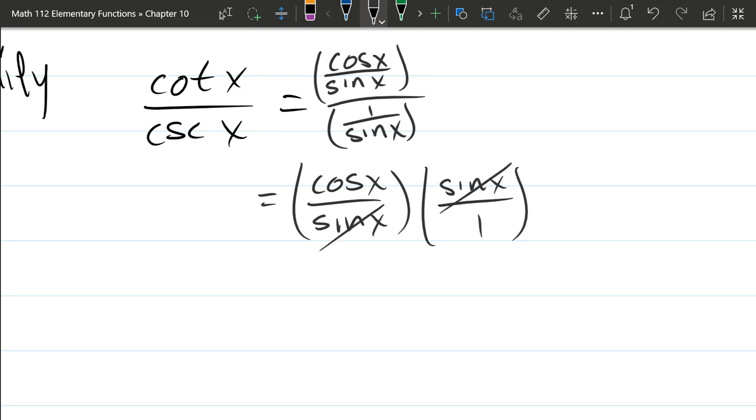Sine divided by sine, cancel. And we're left with cosx over one, also known as cosx. So that's all there is to this simplification right here.